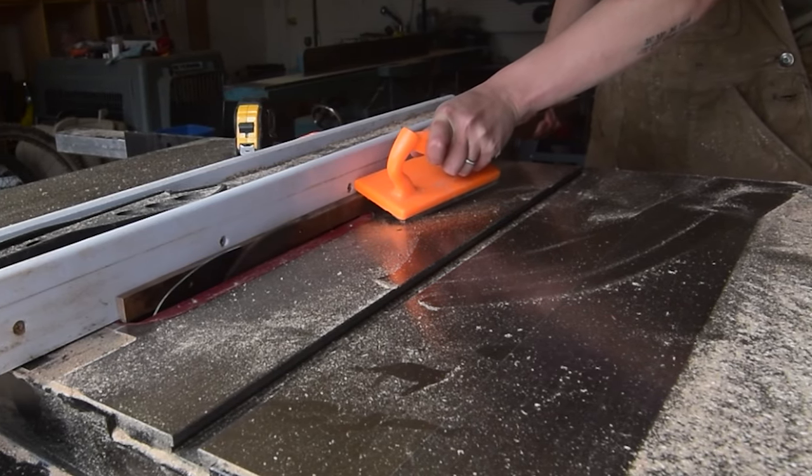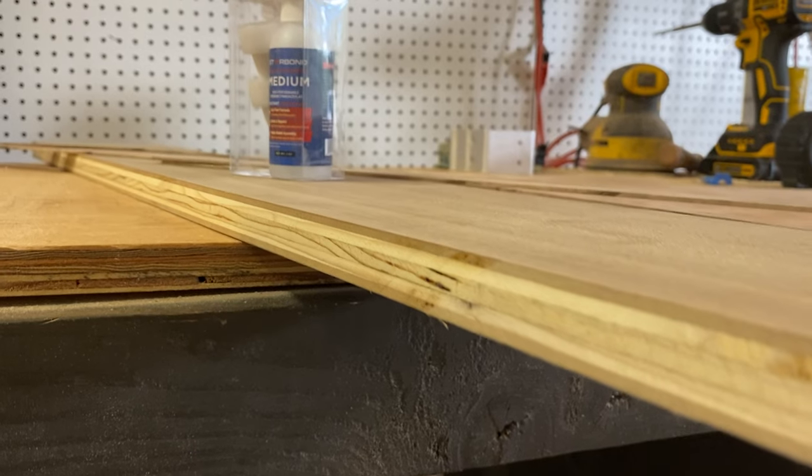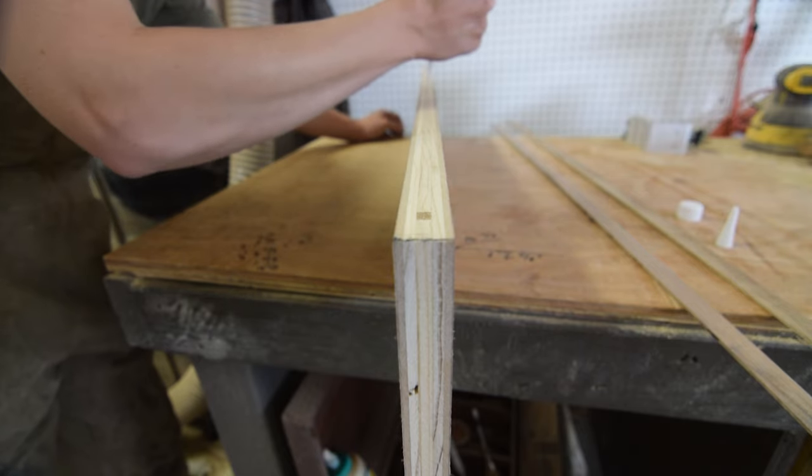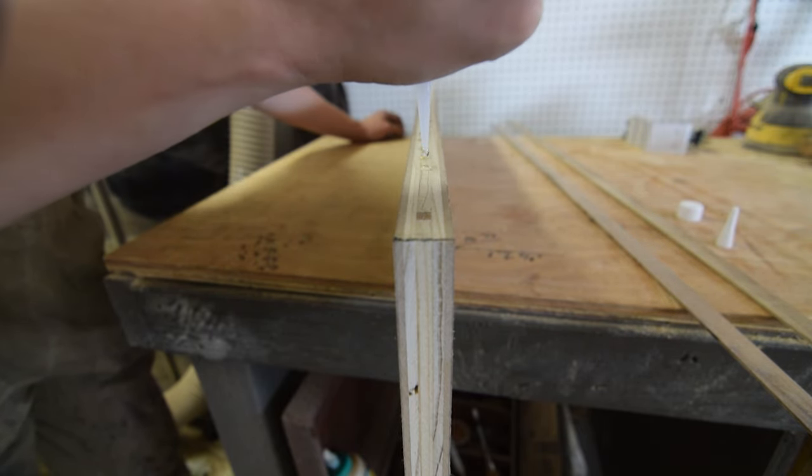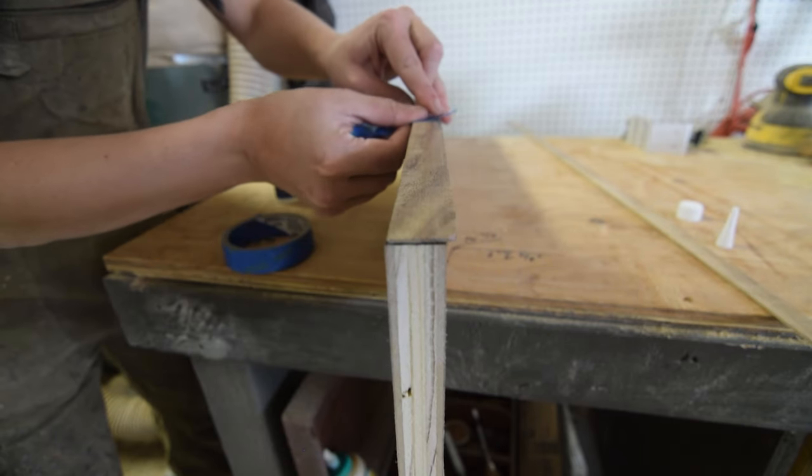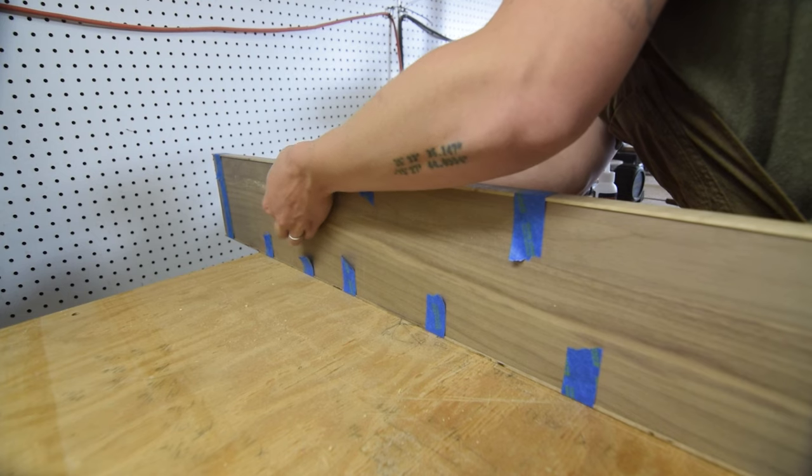Then, using some walnut offcuts, I cut the edge banding. I used Starbond's Medium Thickness Clear Super Glue to bind the banding to the edges. Again, I was super happy with how quickly and cleanly this bond was created.